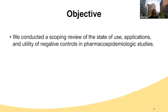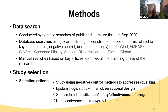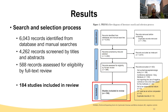We tried to review the state of use and utility of negative controls in pharmacoepidemiology studies. We conducted a literature search through September 2020 across different databases: PubMed, Embase, CINAHL, Cochrane Library, Scopus, and Dissertation and Thesis Global. Any pharmacoepidemiology study that used negative controls for utilization, safety, and effectiveness were included. We identified 6,043 articles; after screening and reviewing abstracts and titles, 588 were further reviewed, and we included 184 studies in our final review.